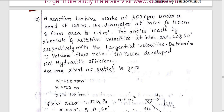A reaction turbine works at 450 rpm under a head of 120 meters. Its diameter at the inlet is 120 cm and the flow area is 0.4 m². The angle made by the absolute velocity and the relative velocity at the inlet are 20 degrees and 60 degrees respectively.